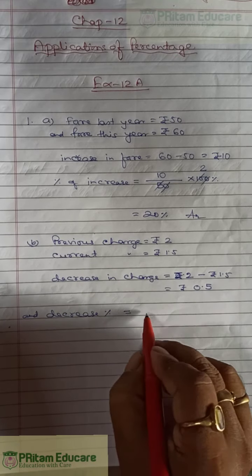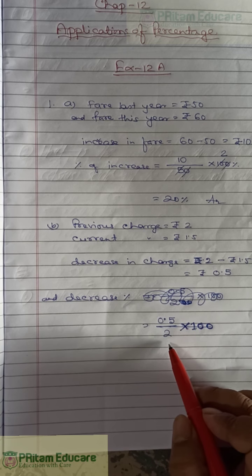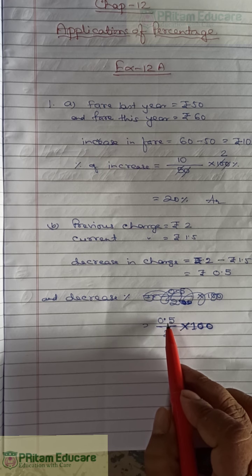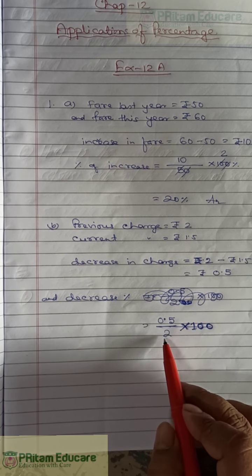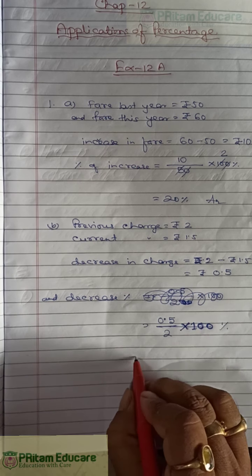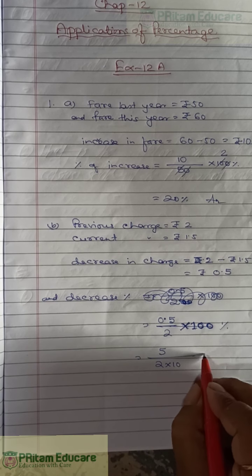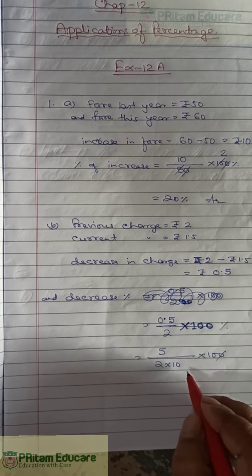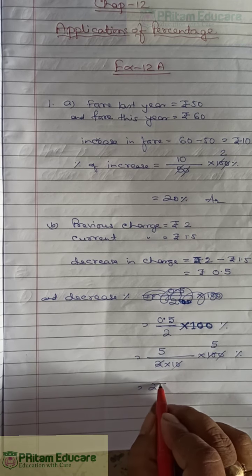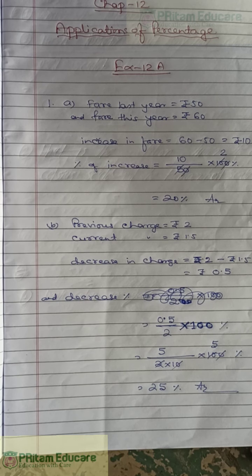Decrease percent = decrease in charge divided by previous charge, into 100. So that is 0.5 divided by 2, into 100. The decimal point is removed, giving 50 divided by 2, and canceling gives 25 percent. So 25 percent is the decrease percent for Question 1b.